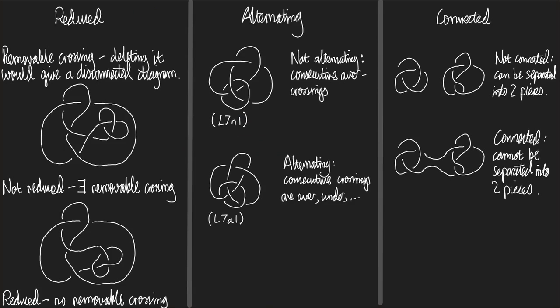Let's start with 'reduced.' In order to know what it means for a diagram to be reduced, we need to know what it means for a crossing to be removable. A crossing is removable if deleting it would give you a disconnected diagram. Disconnected means you can draw a circle in the plane that never meets the diagram but which contains some of the diagram inside it and some outside it.